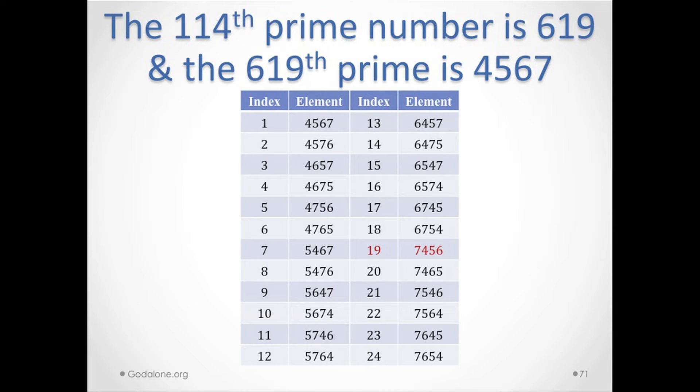The 114th prime is 619. The 619th prime is 4567 — a very easy number with four consecutive digits.